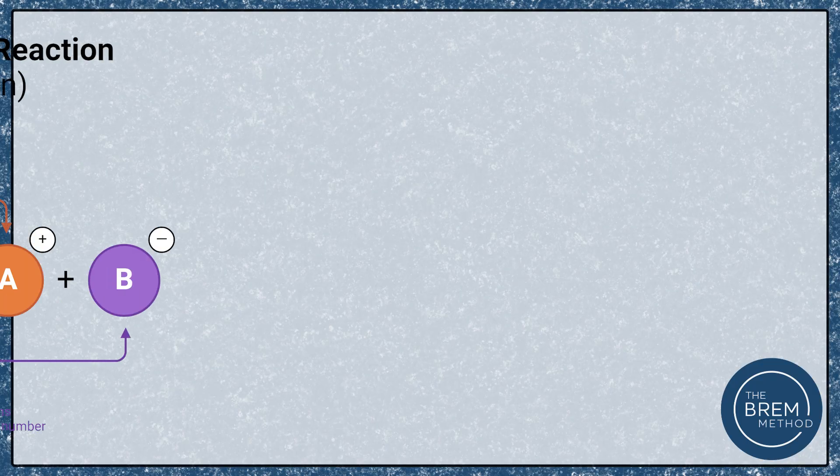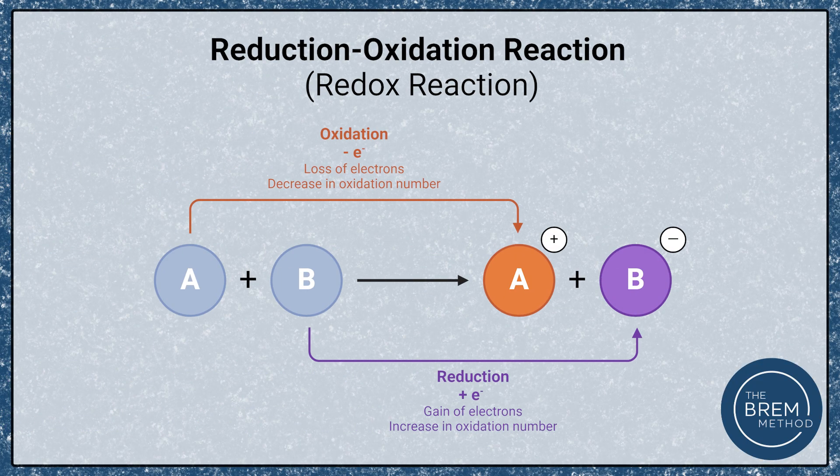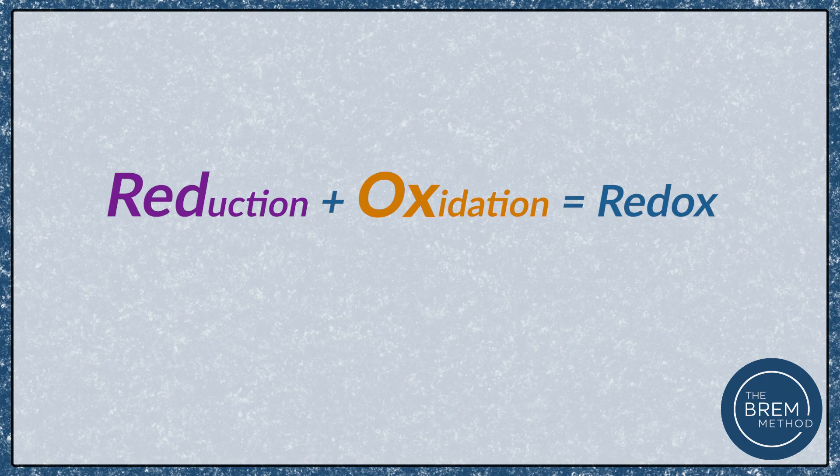Redox reactions are interesting because we're not actually changing atoms — we're not substituting atoms or losing or gaining full atoms. We're literally just changing valence electrons on a given atom in a molecule, and that usually changes the bond features or the charge of that particular molecule. Oxidation is loss of electrons from our atoms, and reduction is the gain of those electrons. That's why we call these reactions redox — as one molecule loses electrons, the other molecule will gain them. Often we'll call these half reactions: the reduction half and the oxidation half.